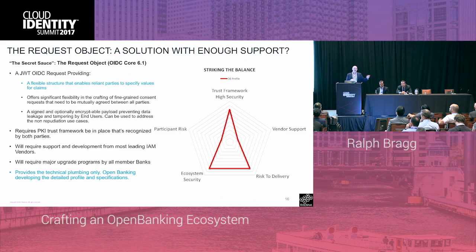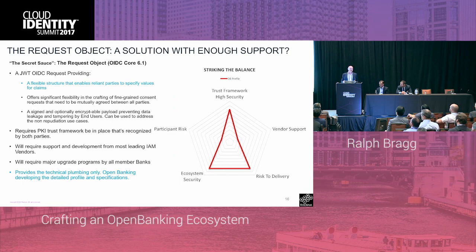We went out to the banks and said: does any of your vendors support this? And they all came back and said no, but we will shortly if you really need it. So all the banks in the UK, in addition to having to build a whole bunch of functional APIs integrated with a new trust framework, are having to do a major security upgrade of all of their identity and access management vendors in order to meet our deadlines.